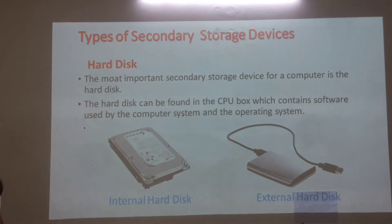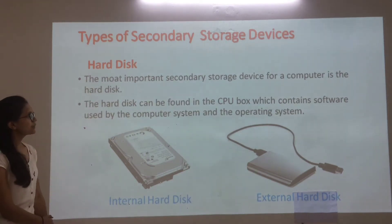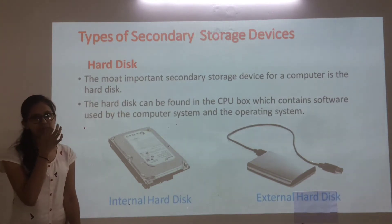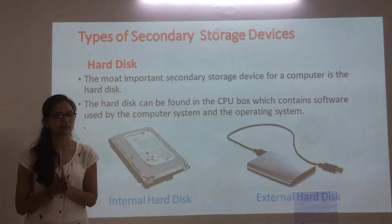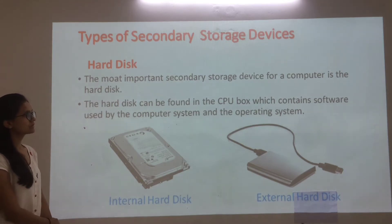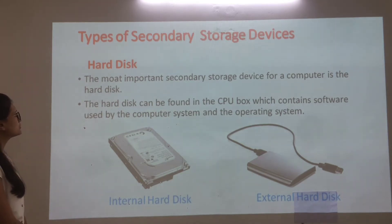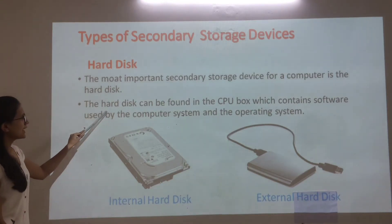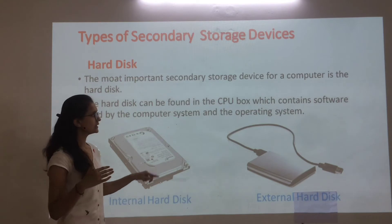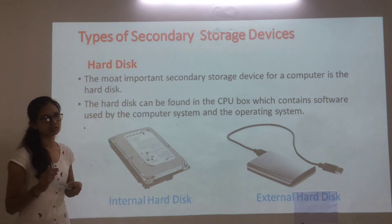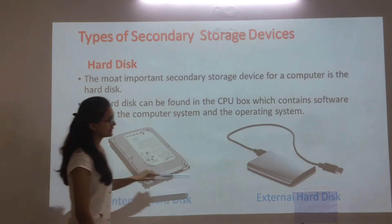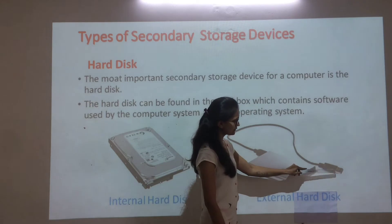Types of secondary storage devices: Hard disk. The most important secondary storage device for a computer is the hard disk. Hard disk can be found in the CPU box, which contains software used by the computer system and the operating system. This is the internal hard disk, which is inside the CPU, and this is the external hard disk, which we connect from outside.